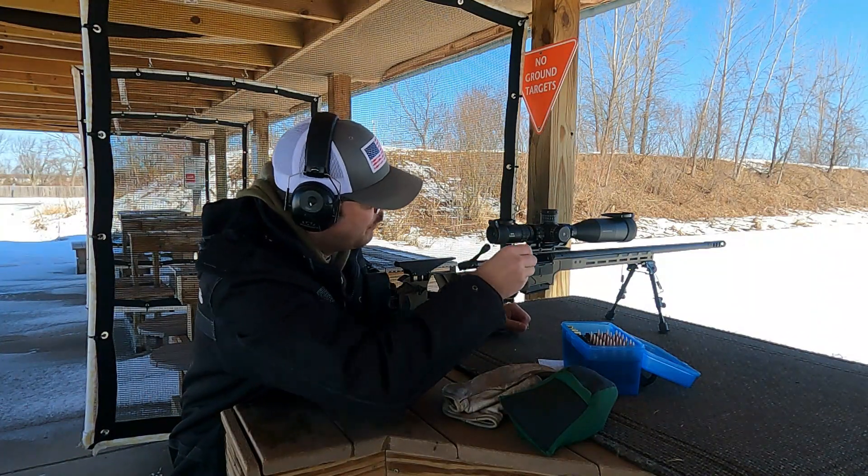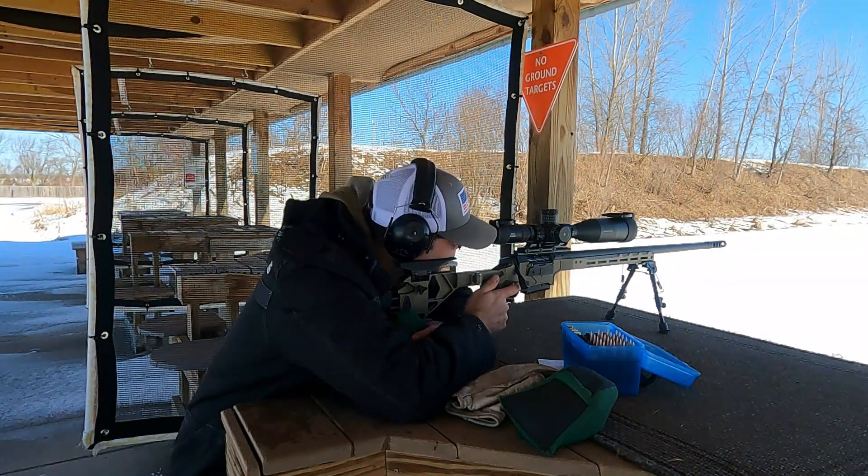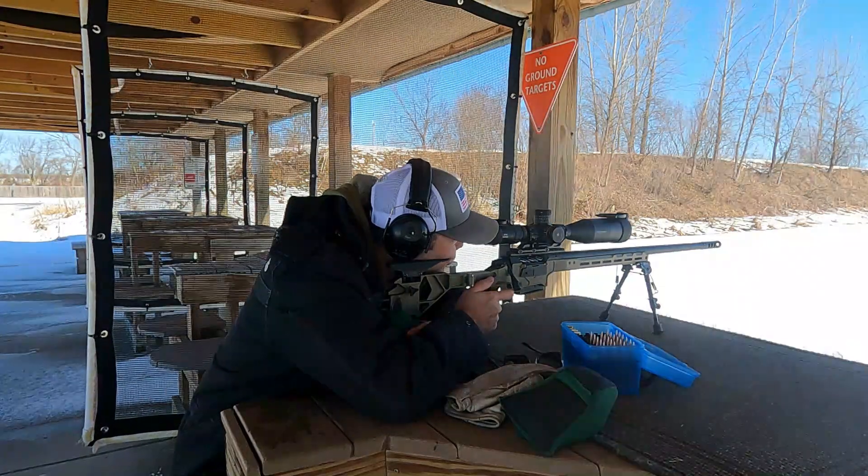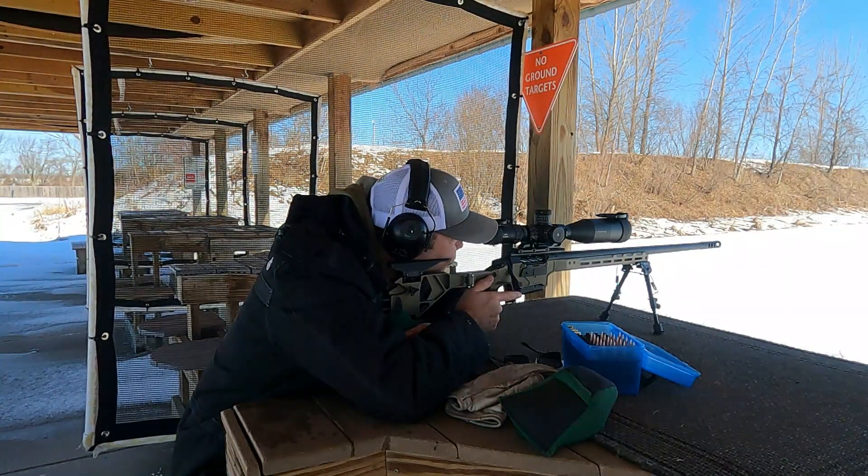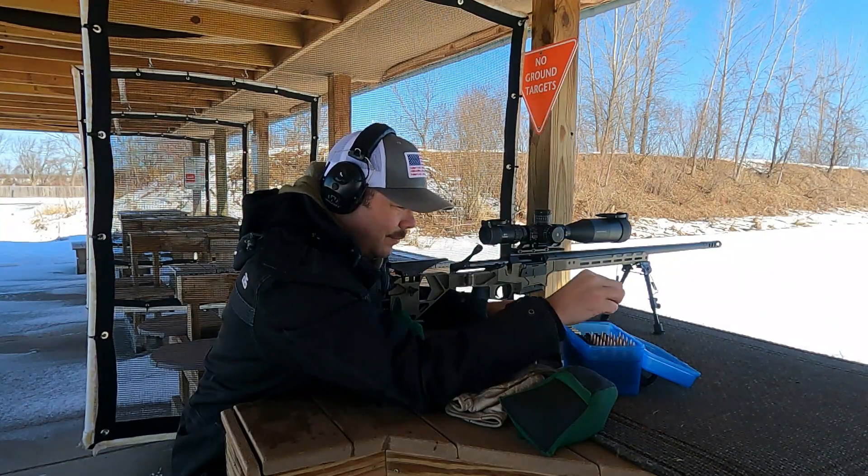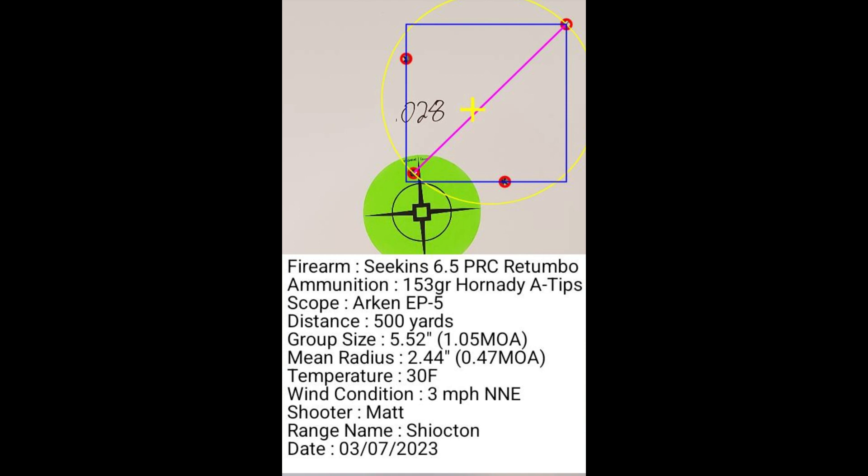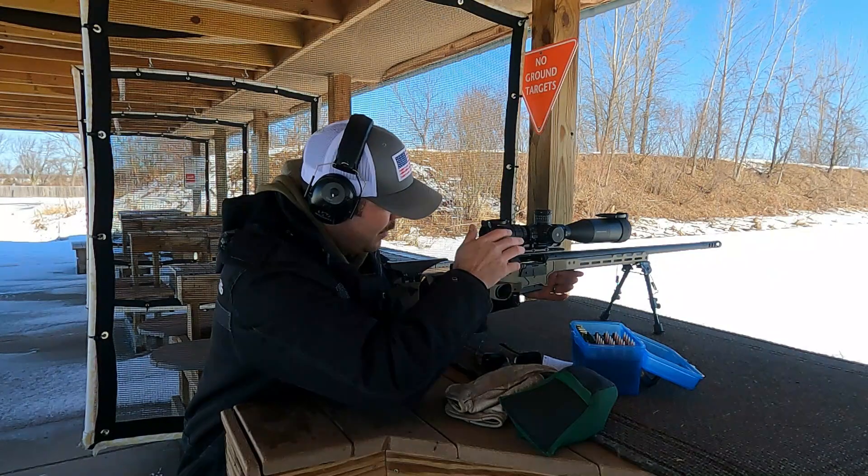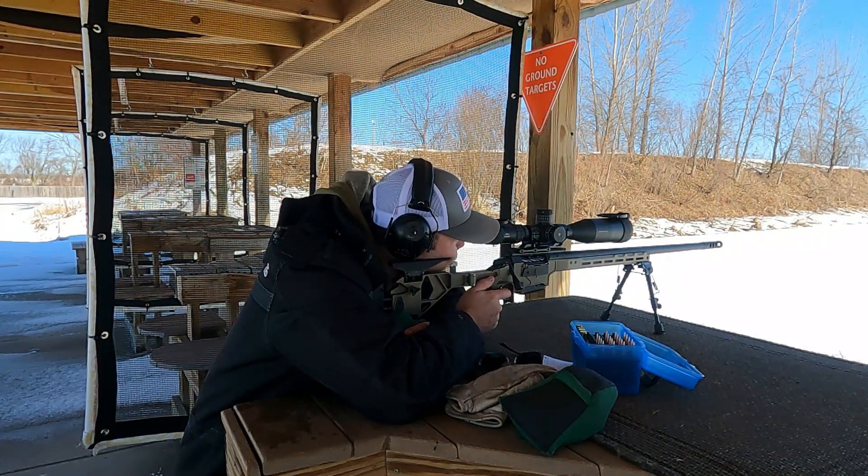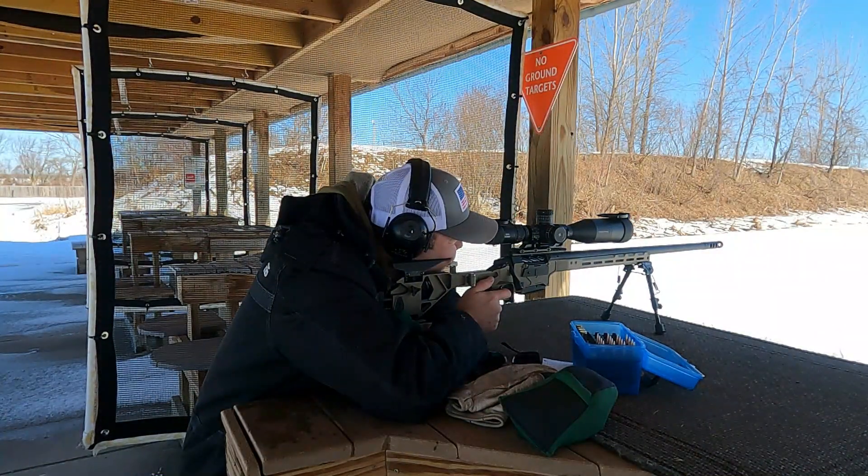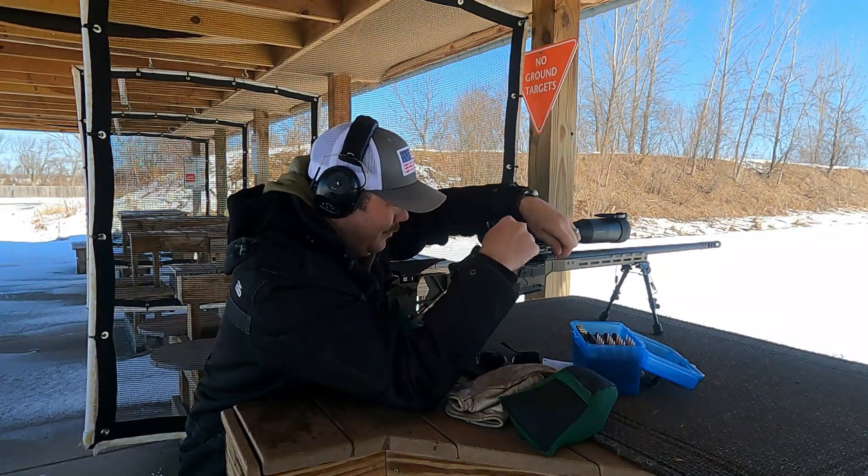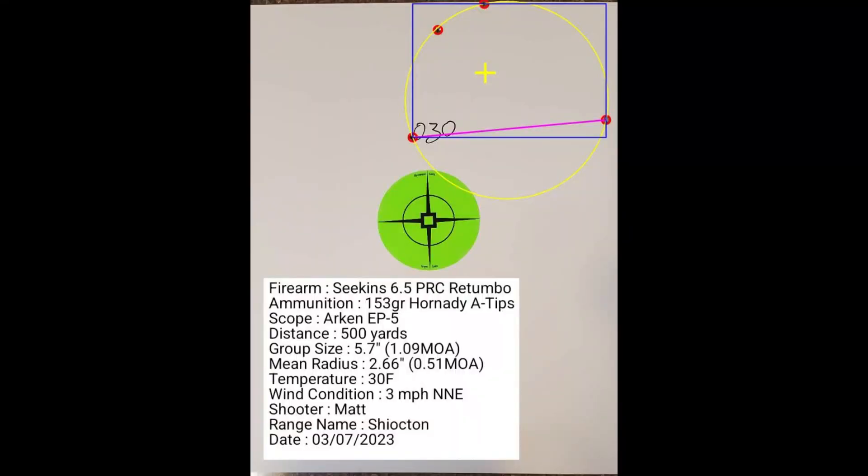This four shot group is at 28 thousandths from jam. At 28 thousandths from jam, I had a group size of 1.05 MOA with a mean radius of 0.47 MOA. This four shot group is going to be at 30 thousandths from jam. At 30 thousandths from jam, I had a group size of 1.09 MOA and a mean radius of 0.51 MOA.